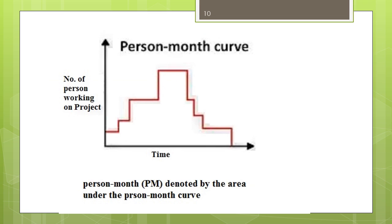The effort estimation is expressed in units of person-months. It is the area under the person-month plot. It should be carefully noted that an effort of 100 PM does not imply that 100 persons should work for 1 month, nor does it imply that 1 person should be employed for 100 months — it denotes the area under the person-month curve.